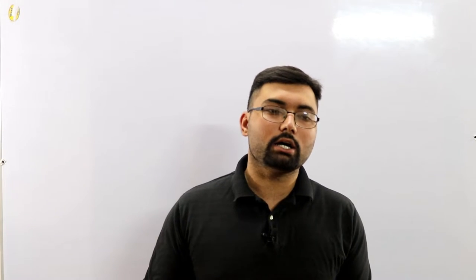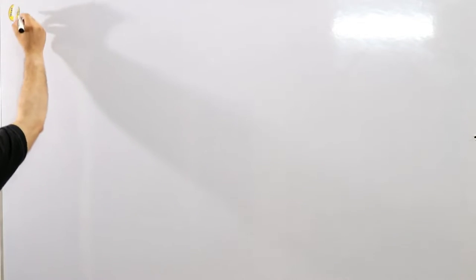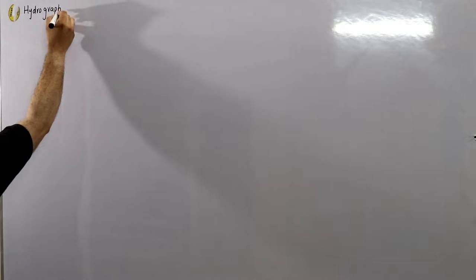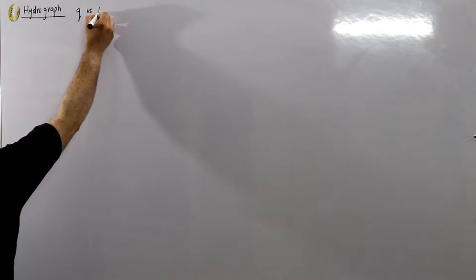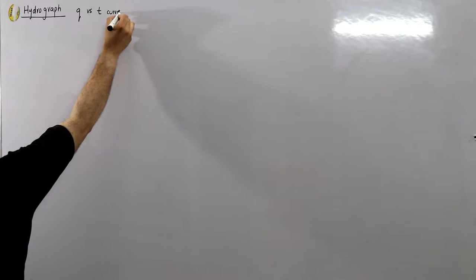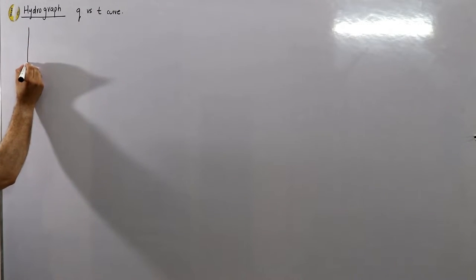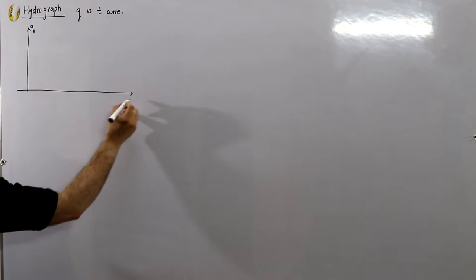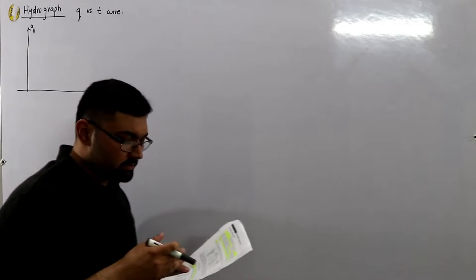The hydrograph shows the trend of variation of load flow — it shows load flow variation with respect to time, analogous to the load curve we've seen previously. The hydrograph is a curve drawn between discharge Q versus time, showing the variation of the flow of water. On the y-axis you have discharge, on the x-axis you have time.